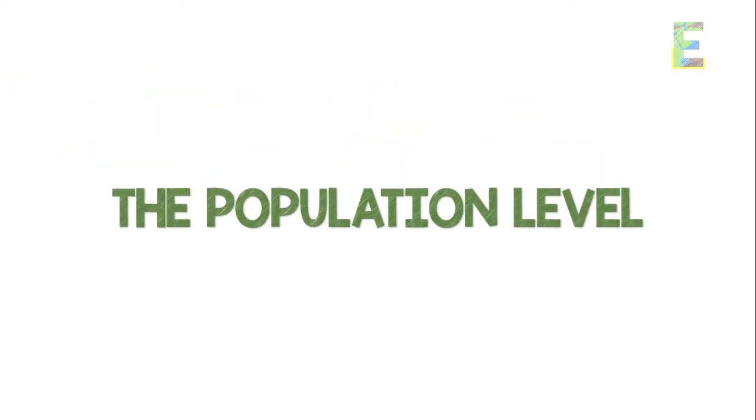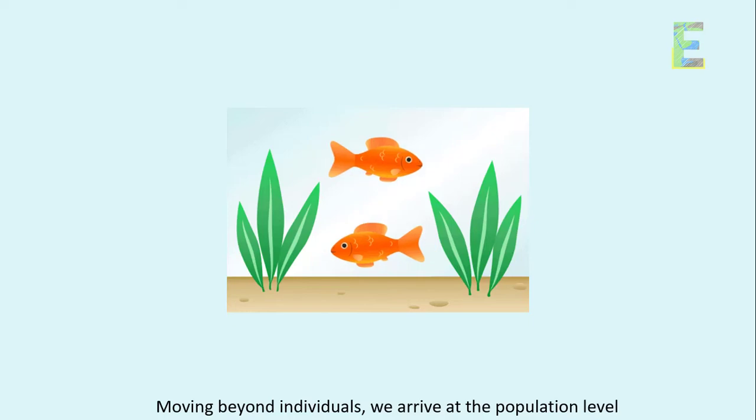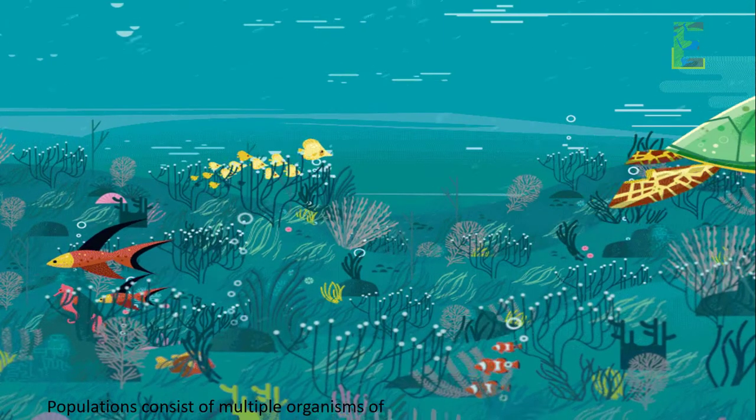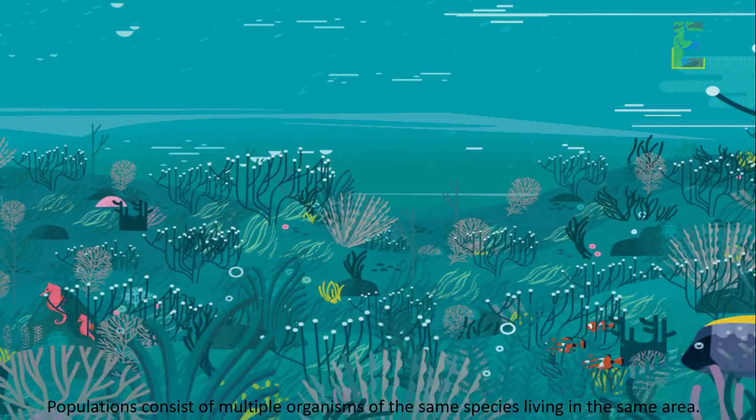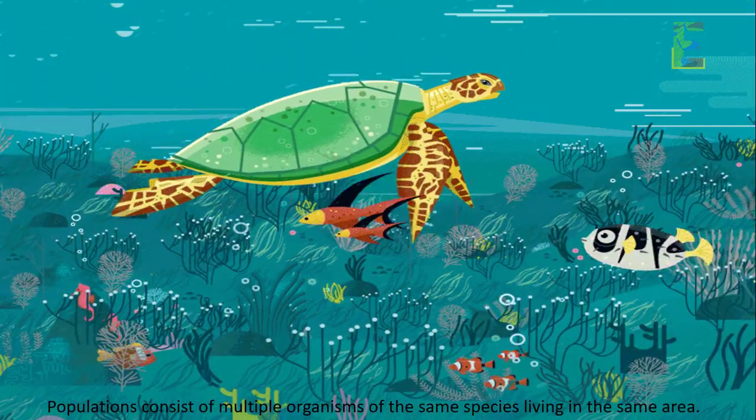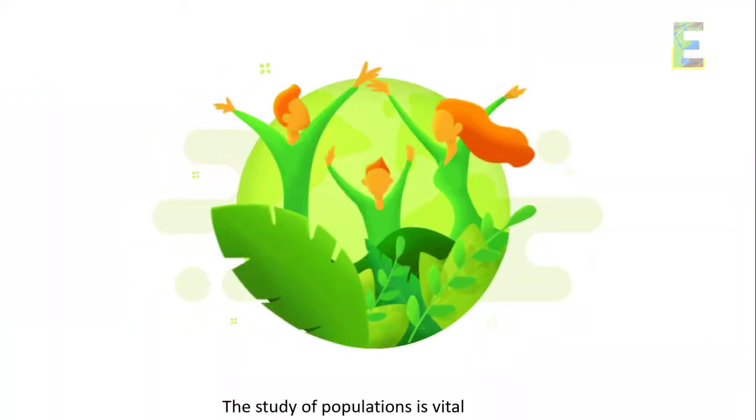The population level. Moving beyond individuals, we arrive at the population level. Populations consist of multiple organisms of the same species living in the same area. The study of populations is vital in ecology.